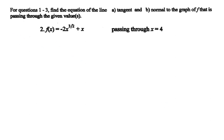This is a video I call Normal and Tangent Line Problems — Homework Help for an Upcoming Homework Assignment in Calculus. Questions 1 through 3 ask us to evaluate the equation of the line, both tangent and normal, to the graph of f passing through a given value. Here we have f(x) = -2x^(3/2) + x, passing through x = 4.